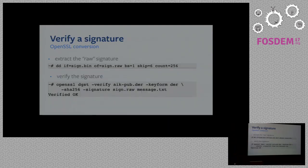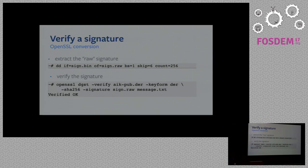Now we have the signature, which is unfortunately not in the right format, so we need to skip the header described in the TCG standard and extract the raw signature, which is 256 bytes long — we are using an RSA 2048-bit key. Then, on a different platform, we can verify the signature with OpenSSL. This is a bit hacky, but it can be used — for example, if you have a fleet of devices, you can identify every single device in your fleet with this method using a TPM, because you can sign something and authenticate your devices with embedded TPM.